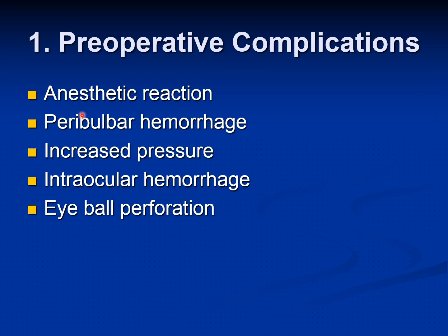Preoperative complications are usually related to anesthesia, such as anesthetic reaction. Peribulbar hemorrhage, which is a hemorrhage around the eyeball, can increase pressure and lead to further complications. Or you can have an intraocular hemorrhage because of the needle going inside the eyeball, or even double perforation of the eyeball. These are the preoperative complications.